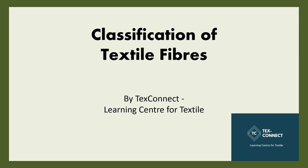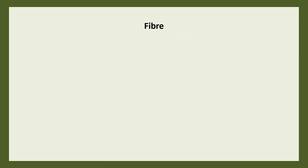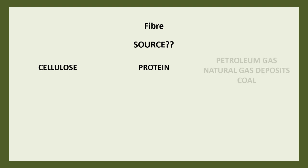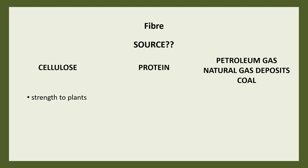Before we begin classifying fibers, let us first know where fibers come from and what are the various sources of fibers. The natural sources are cellulose and protein. The cellulose fibers act as a skeleton to the plants — bundles of fibers are bound together by natural gum and resins.